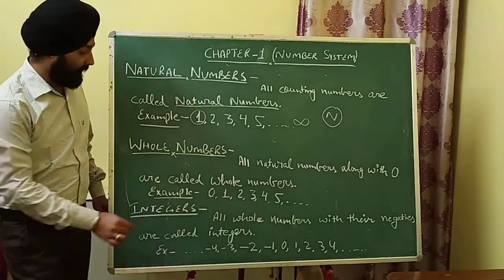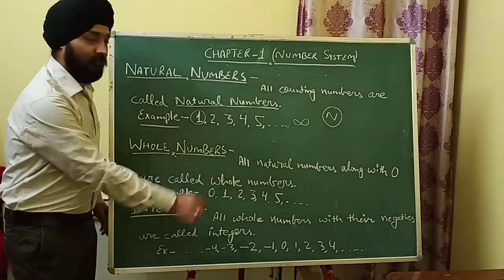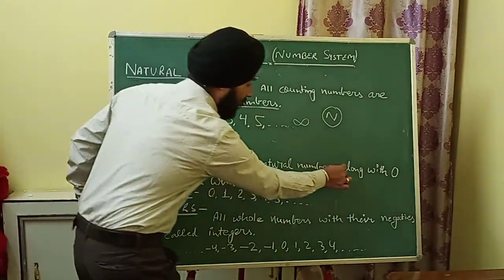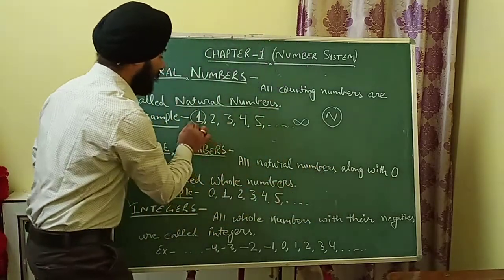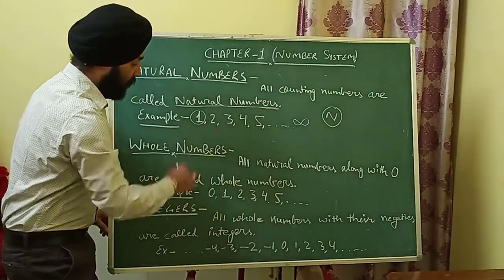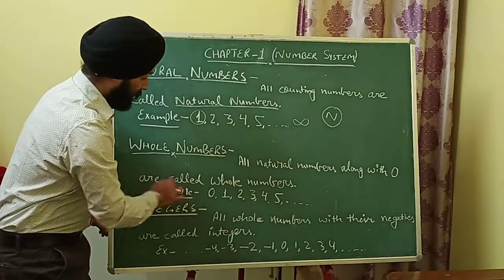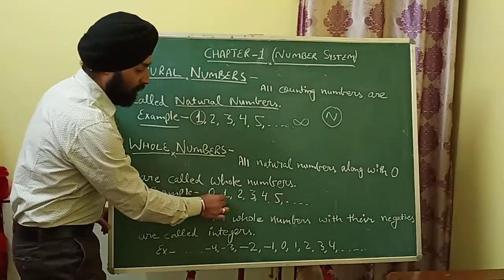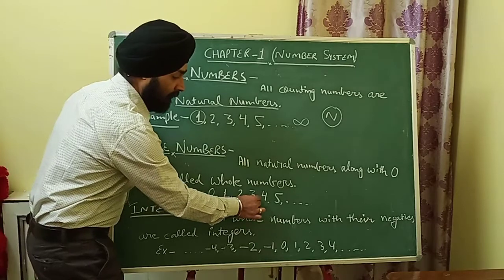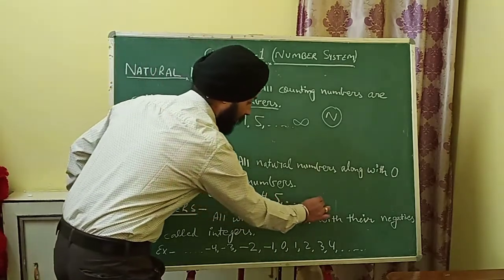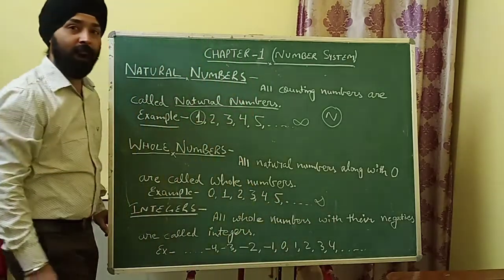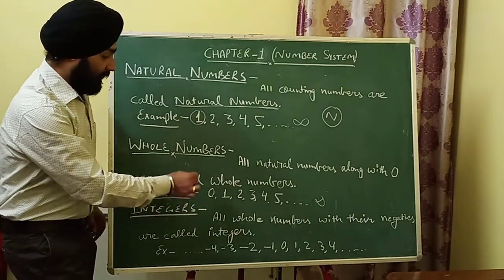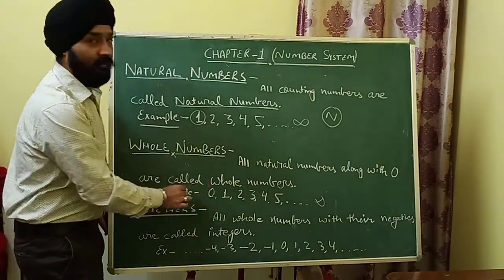Our next topic is whole numbers. All natural numbers along with zero are called whole numbers. If we add zero to all natural numbers, they become whole numbers. For example: 0, 1, 2, 3, 4, 5 and so on.